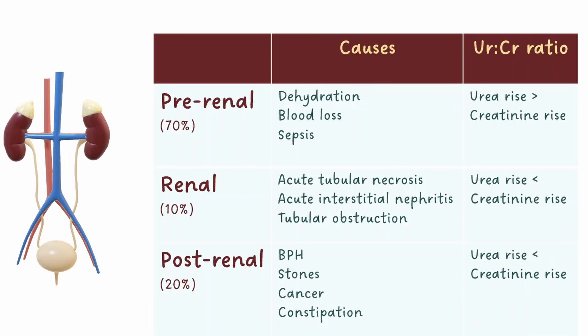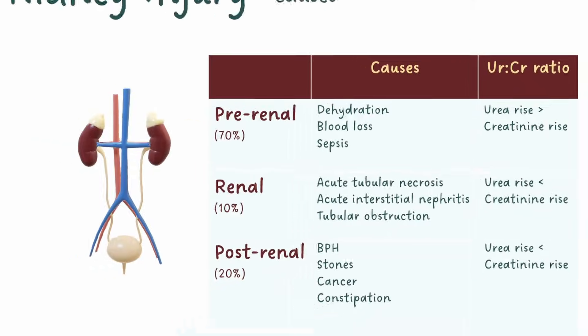Post-renal refers to obstruction to urine flow. This could be caused by benign prostatic hyperplasia, renal or bladder stones, cancer, or constipation.